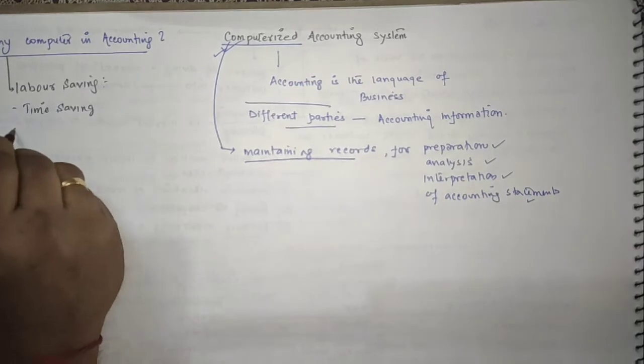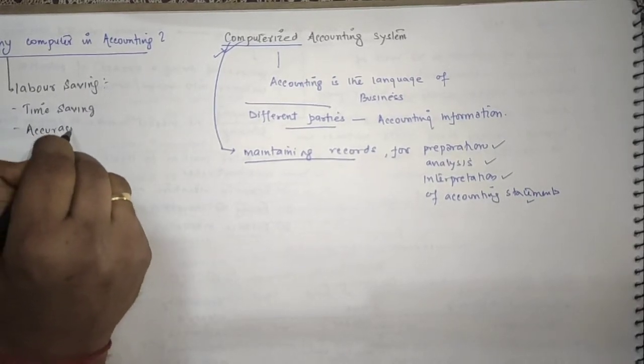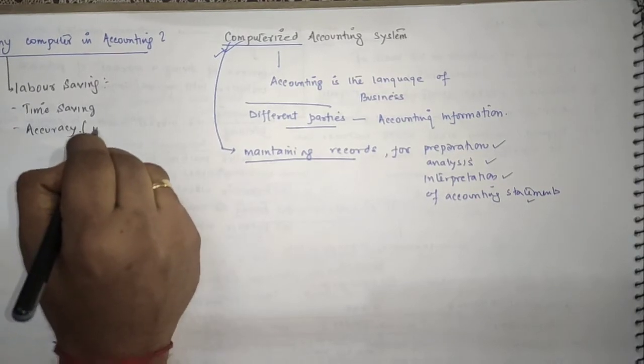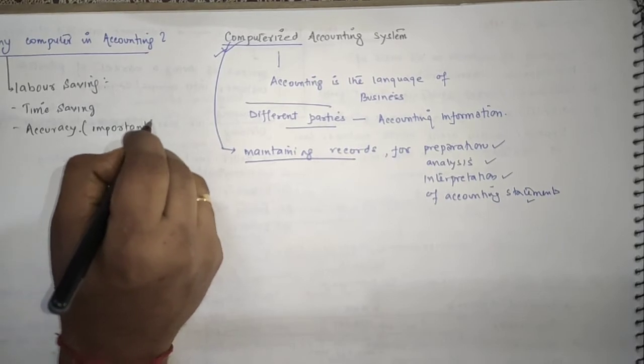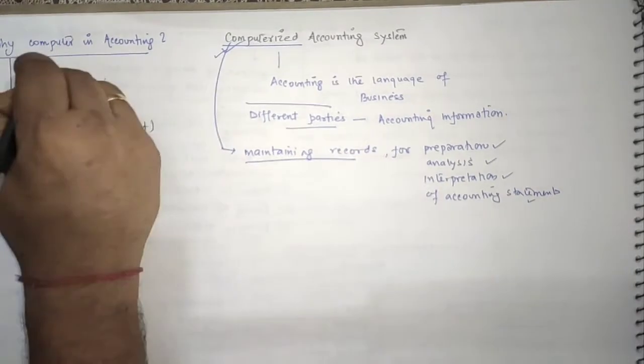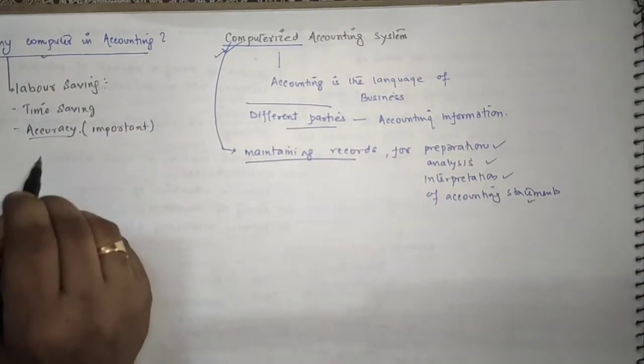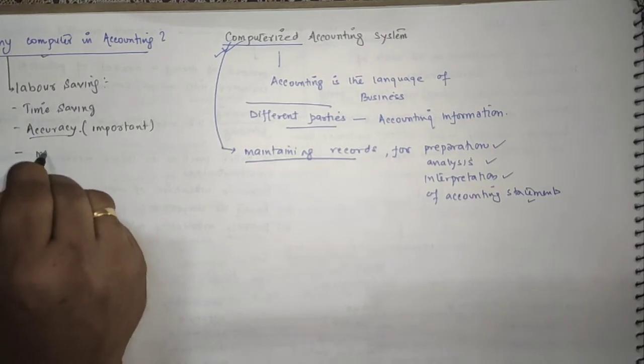We know that it is about accuracy which is most important for the users to get accurate information and computer helps to get accuracy in accounting information.